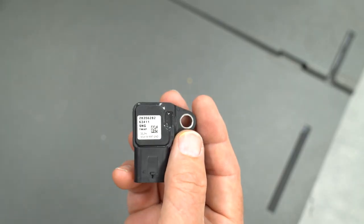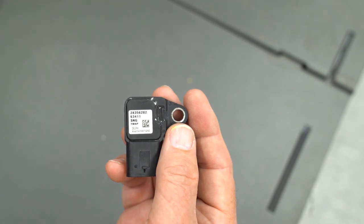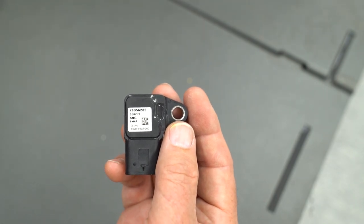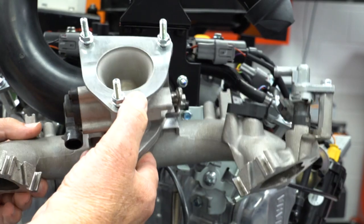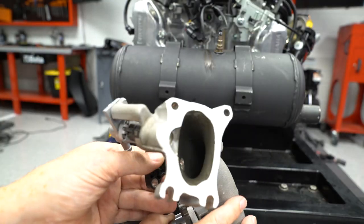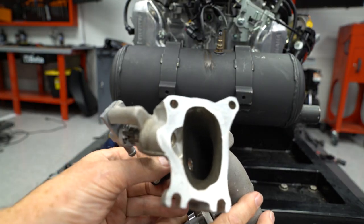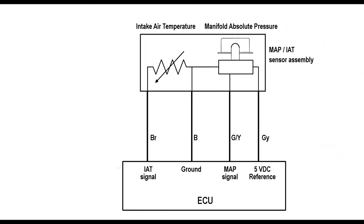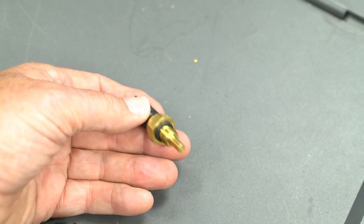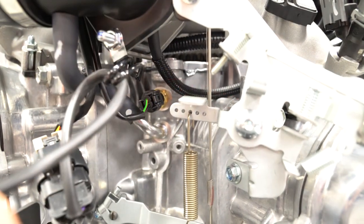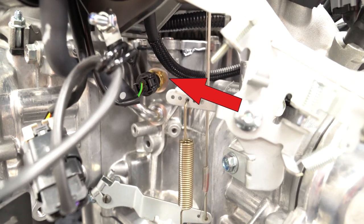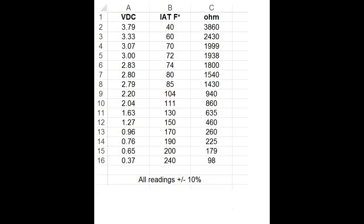A manifold absolute pressure sensor and intake air temperature sensor are contained in one housing and mounted to the Y intake manifold. The MAP sensor measures the air pressure in the intake track. The ECU calculates the air pressure from the DC voltage signal from the MAP sensor. The intake air temperature sensor measures the temperature of the air in the intake track and the engine temperature sensor is mounted in the engine block between the cylinders. The ECU calculates air and engine temperature by the DC voltage signals from these sensors.